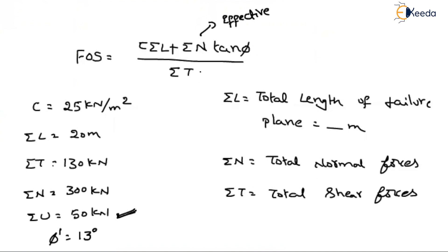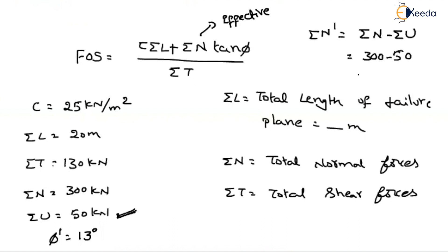Summation of T will always be based on total values, as already discussed in previous videos. Summation of N will always be based on effective values. The effective normal force is: summation of N effective equals summation of N minus pore water pressure, which equals 300 minus 50, giving 250 kilo Newton.